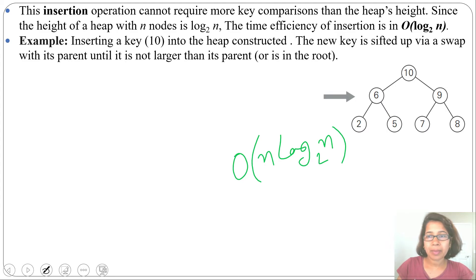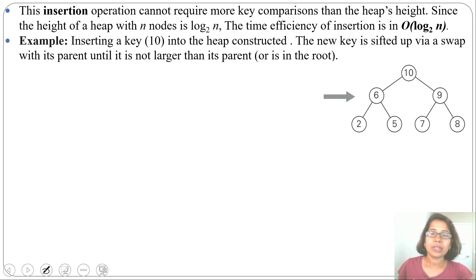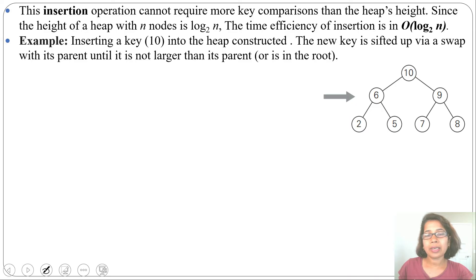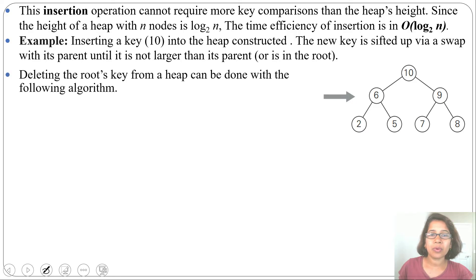For bottom-up heap construction — same as build max heap — the running time is also O(n log₂ n). Now let's discuss how we can delete the maximum node. In a max heap, the maximum node is present at the root.